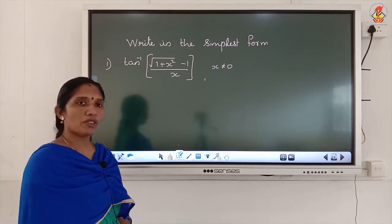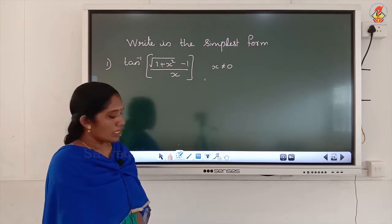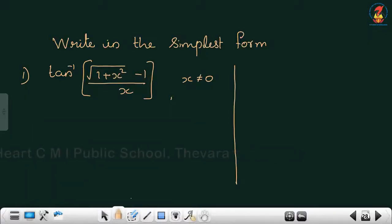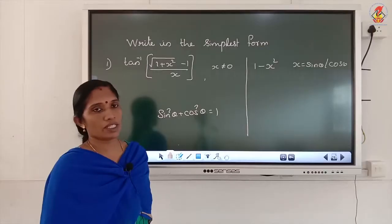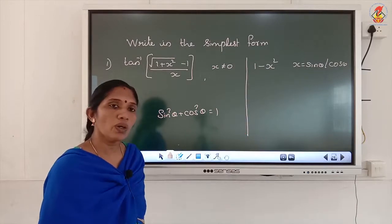What substitution do we use? We usually give trigonometric functions. For 1 minus x squared, we use the identity sin²θ + cos²θ = 1. If x is sinθ, then 1 minus sin²θ is cos²θ. If x is cosθ, then 1 minus cos²θ is sin²θ. So for the format 1 minus x squared, you can give x as sinθ or cosθ.